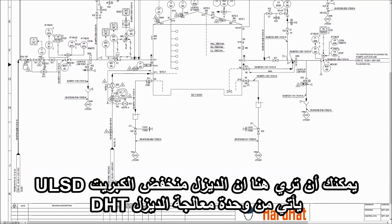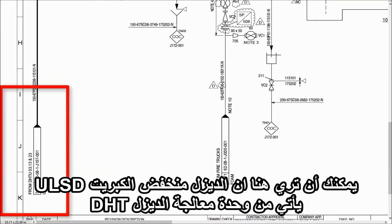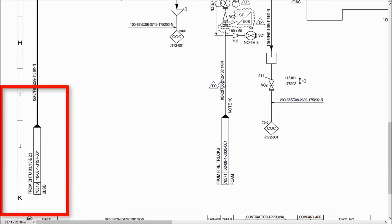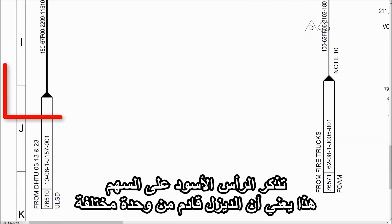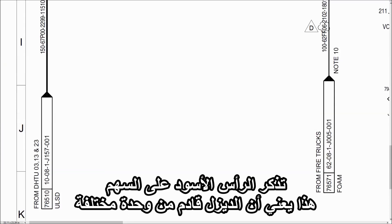Here, ULSD is coming from DHT. You can see that. Remember the black hat on the arrow — you have learned this in the how-to-read PFD video. It means diesel is coming from a different unit.